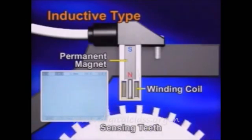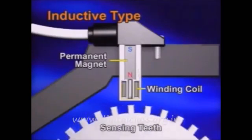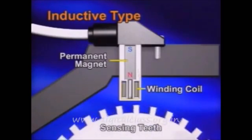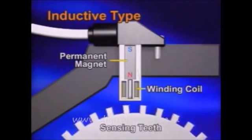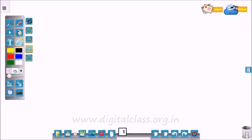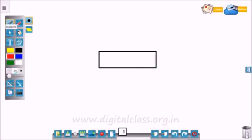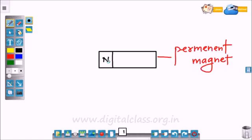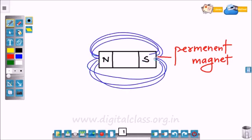Now we are going to see the working principle of the sensor. Here this is a permanent magnet and these are the magnetic fields around it.